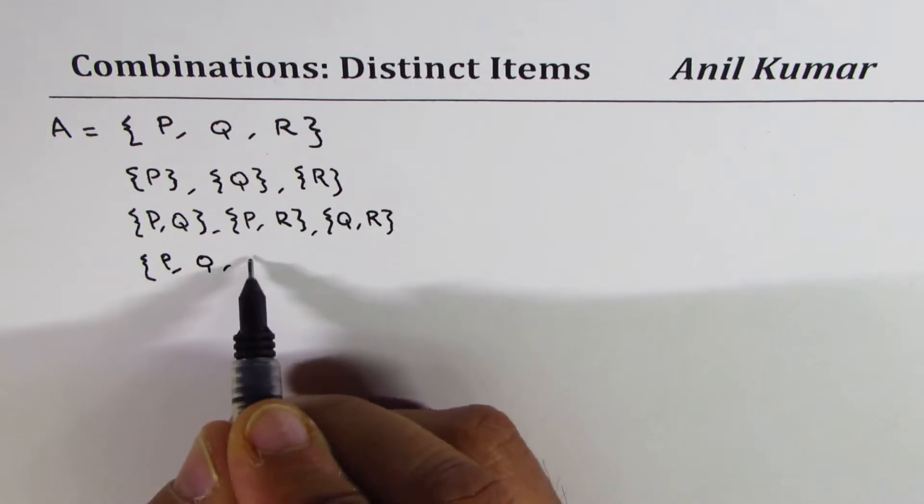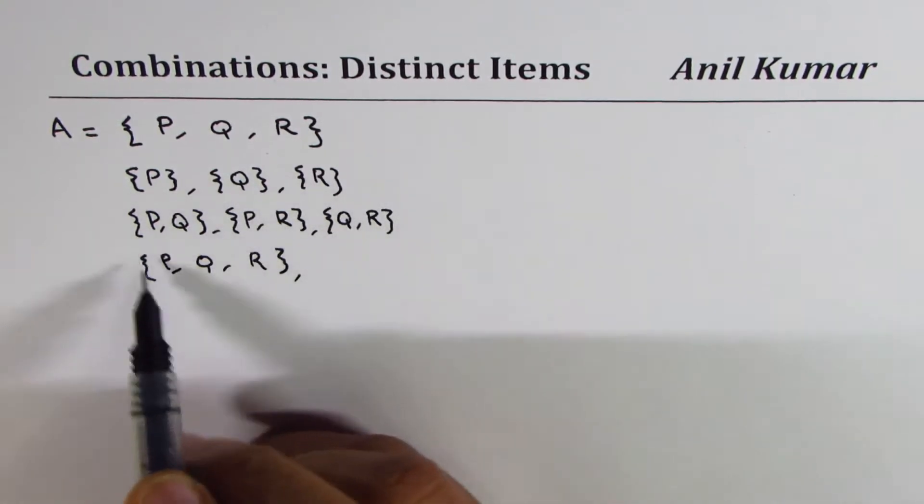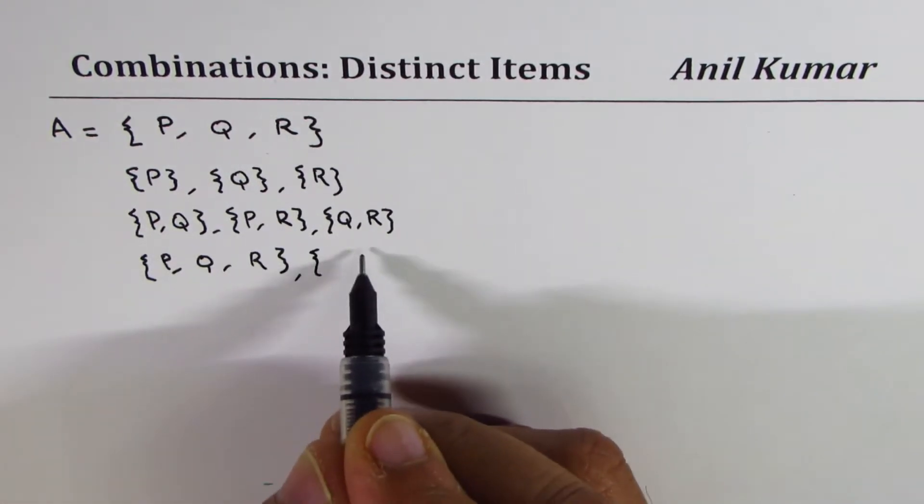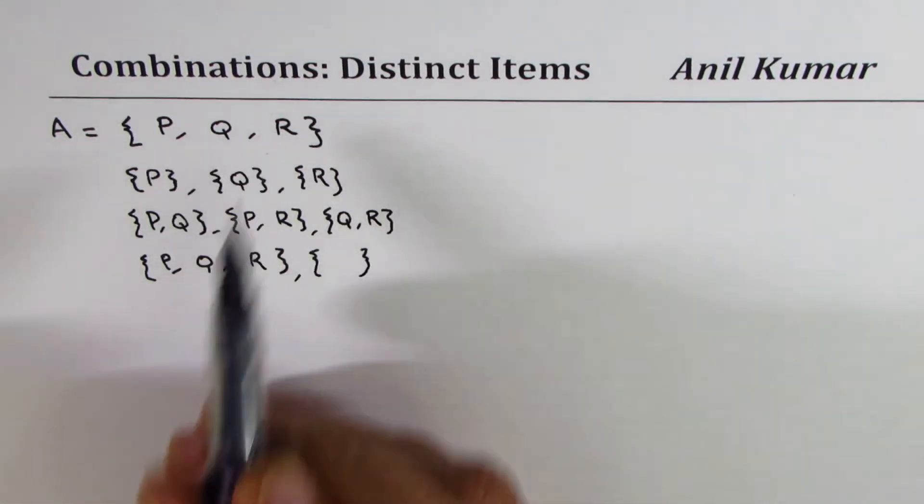But now we can have a combination where all three could be there. So we could have P, Q, and R, all three of them. It's important to note that in these set of combinations, we also have a choice of a null set. That is, we may not take any one of them.